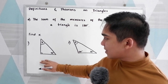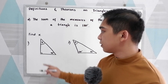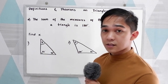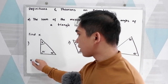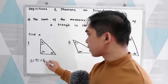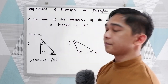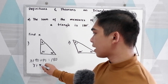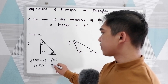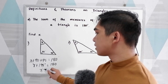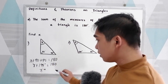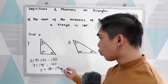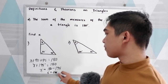For number one, we know that this is a right triangle. We have a perpendicular line here, so that measures 90 degrees. We need to solve for x. So, using the theorem: x plus 90 plus 45 is equal to 180 degrees. Now, x plus 90 plus 45, that is 135 degrees. So, using the addition property of equality, subtract 135 from both sides, and x is equal to 45 degrees.